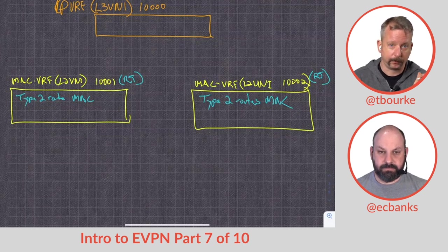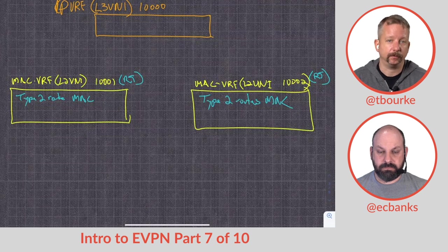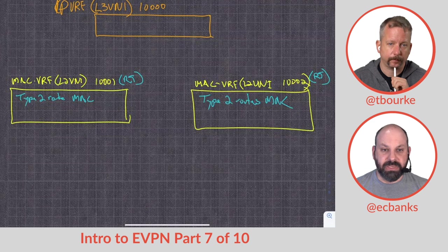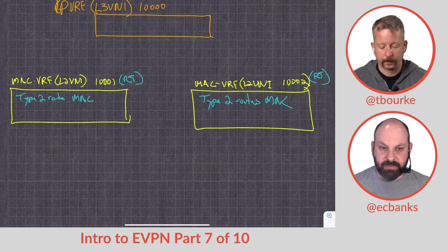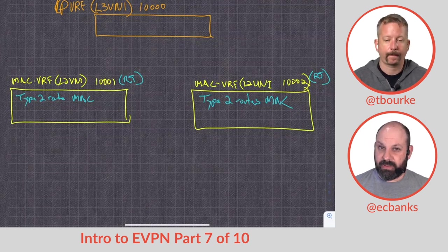So the layer three VNI is 10,000. The layer two VNIs are 10,001 and 10,002. Because we're not mapping, we don't have to map to a VLAN one-to-one. We've just got some layer three routing that we're doing here from one place to another. They can all live in the same VNI effectively?